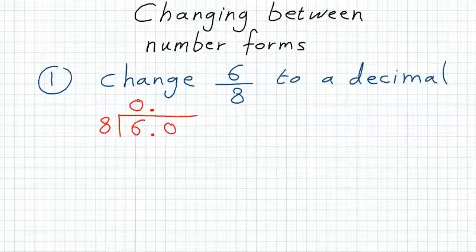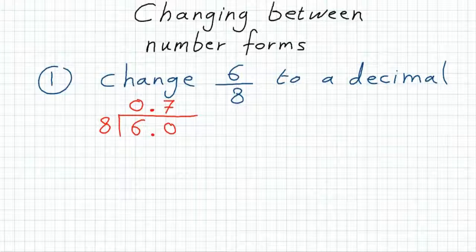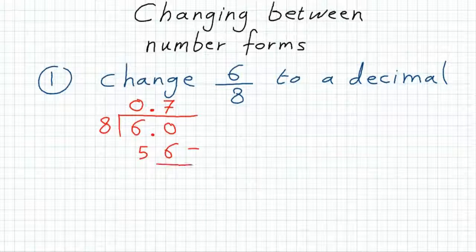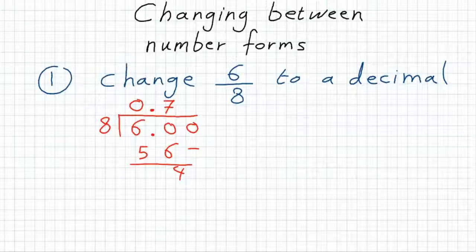60, if you divide it by 8, you will have 7. 7 times 8 is 56. Subtract, you will have remainder 4. Then add another 0 for the dividend. Bring it down.